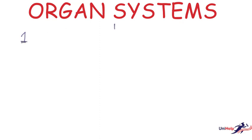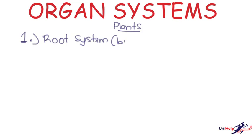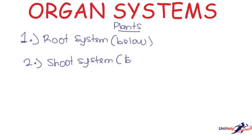For organ systems in plants, there are just two types: the root system, which is beneath the ground, and the shoot system, which is above the ground.